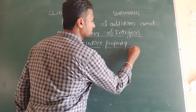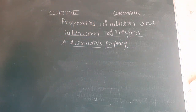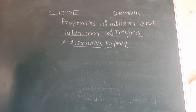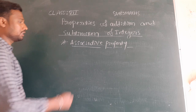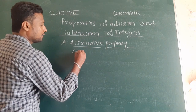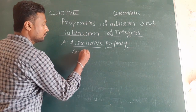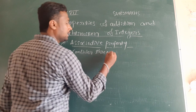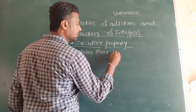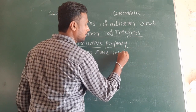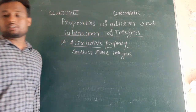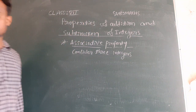For associative property we want three integers. Let us consider three integers as given: minus 3, minus 2, and minus 5. We will check this property with addition, because for subtraction we already get different answers in commutative property.